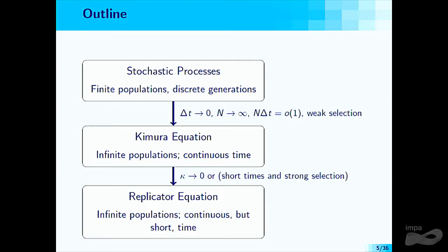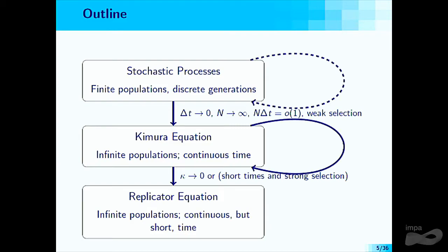This is a very classical topic for the stochastic process itself. Understanding the Kimura equation is somewhat new — particularly regarding boundary conditions for the forward equation, which were not imposed in the original formulation. We will also redo the derivation from the stochastic process to the Kimura equation and then to the replicator equation using a completely different formulation. This ongoing work shows we need to introduce an intermediate step between the two equations to make the deduction mathematically correct.